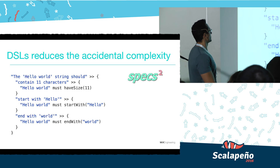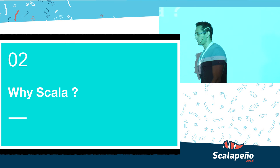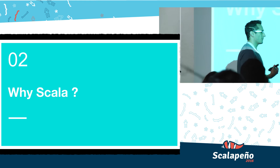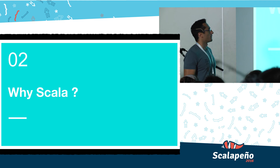Now that we know what DSLs are and we saw a few examples of them, we would like a language to implement them in. Well, we're at ScalaPinio, so obviously it would be Scala. Scala offers us a lot of good features that reduce the amount of code we write and allow us to express our intention in the code in a very clear way. Let's see what features Scala offers us to build good DSLs.